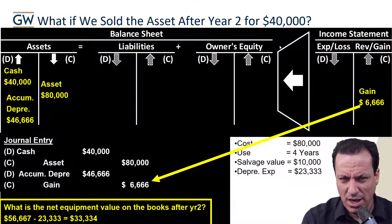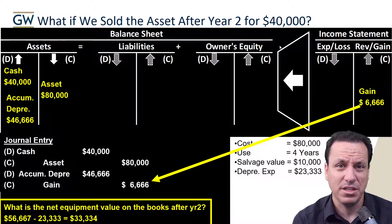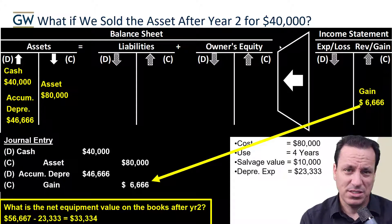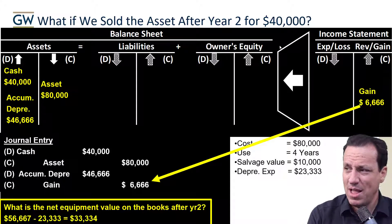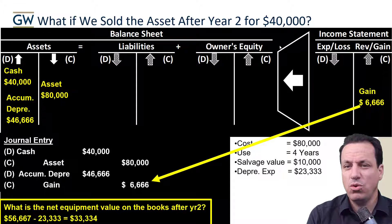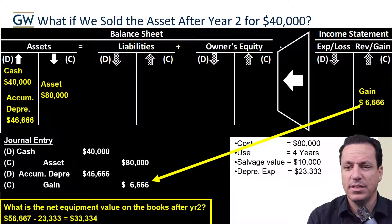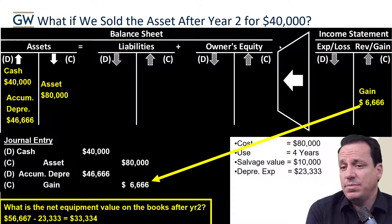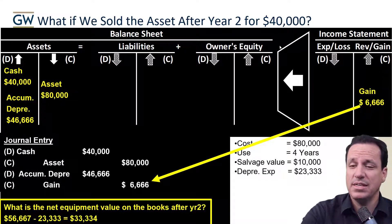You'll notice that since we're not in the business of selling this equipment — it's not our core activity, unlike a company like Caterpillar — this gain is not reported as revenue or cost of goods sold. When selling non-core assets, you report it as a gain or loss on the income statement. So in this case it's a gain.